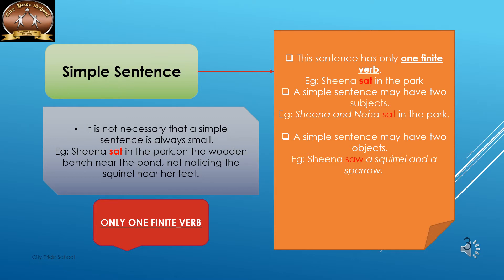The finite verb will be only one, but the subjects and objects can exceed one. A simple sentence may have two subjects — like 'Sheena and Neha sat in the park' — two subjects, but only one finite verb. A simple sentence may also have two objects — like 'Sheena saw a squirrel and a sparrow' — two objects.